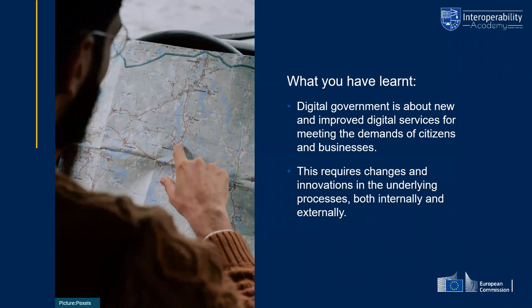What did we learn from this chapter? First, digital government is about new and improved digital services to meet the demands of citizens and businesses. Second, we should also look at the underlying processes beneath these services, which means thinking about how governments — both internally and externally — can improve their way of working and better cooperate with stakeholders outside the public sector.